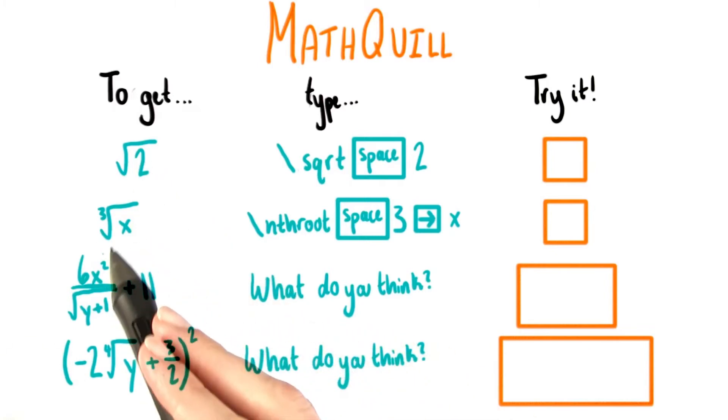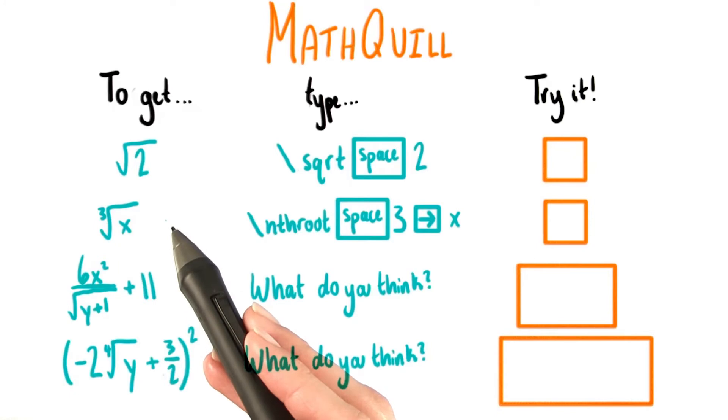But MathQuill also lets us write nth roots. So it allows us to type radical signs and then fill in whatever number we want for the index, and then of course enter whatever we want underneath the radical.